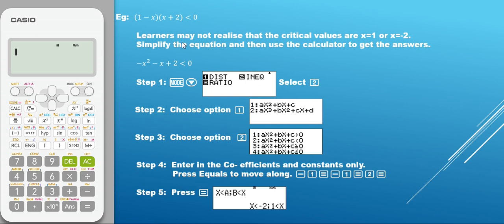What learners might not realize is that I can simplify this down and find my critical values as x equals 1 or x equals negative 2. If learners don't realize this, we can simplify the equation that has been given. So we can multiply out, which I have done for you.